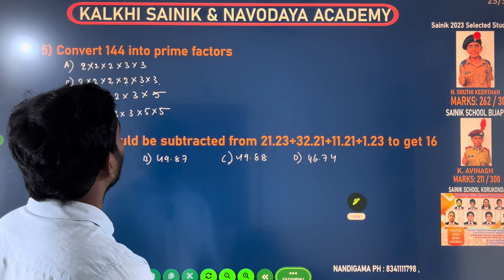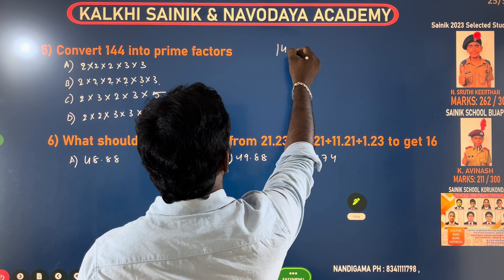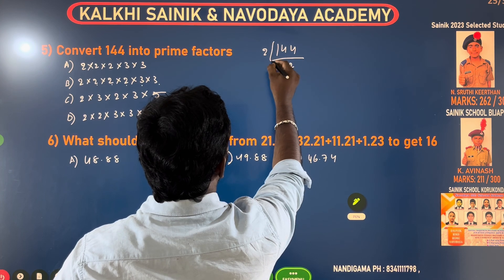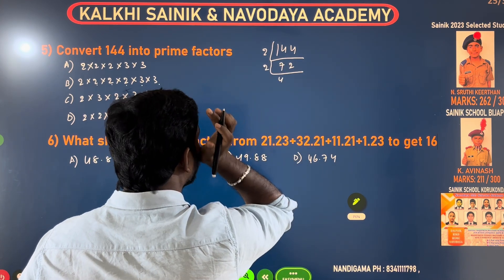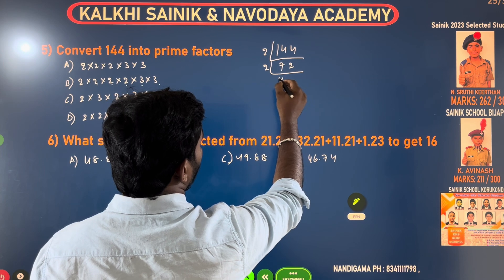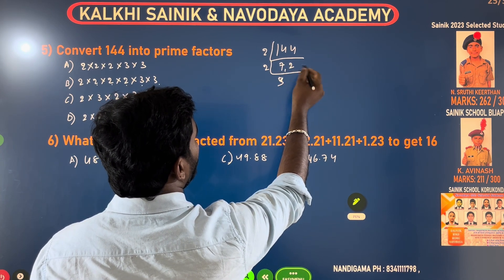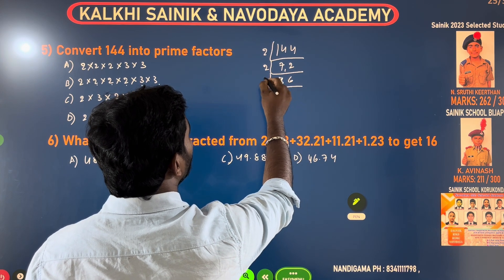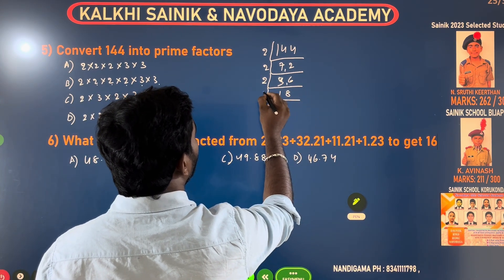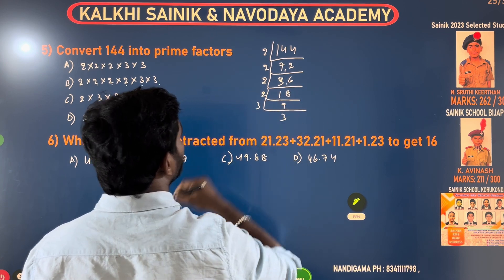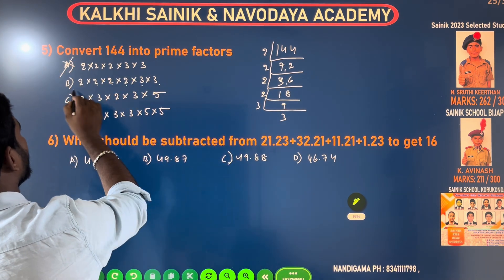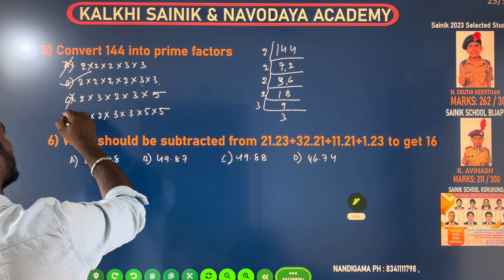Convert 144 into prime factors. Dividing by 2 repeatedly: 144 ÷ 2 = 72, ÷ 2 = 36, ÷ 2 = 18, ÷ 2 = 9, then 9 = 3 × 3. So 144 = 2⁴ × 3². That gives four 2s and two 3s. Option B is the right answer; Option C is wrong.